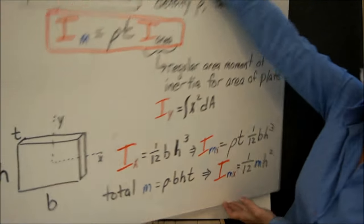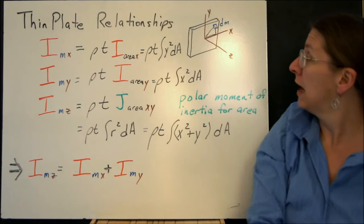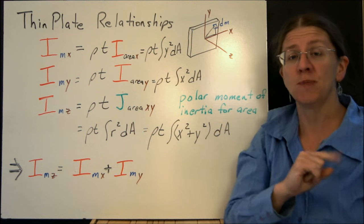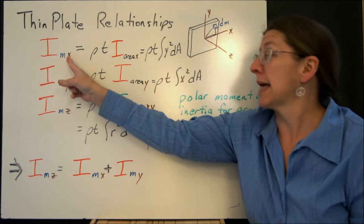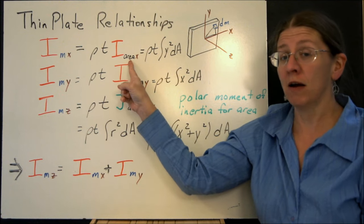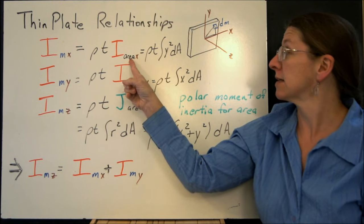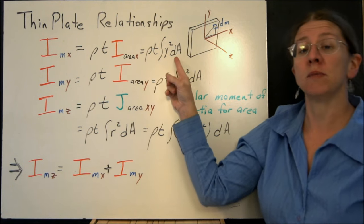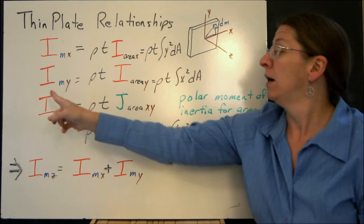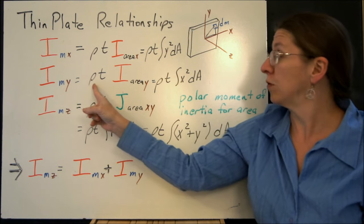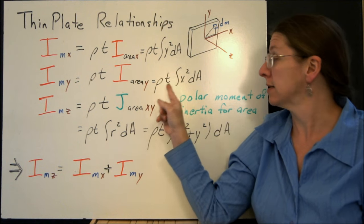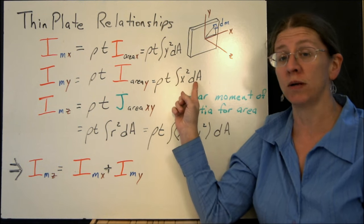So looking from that, there are some thin plate relationships that we can use. If the mass moment of inertia about the x-axis is ρt times the area moment of inertia about the x-axis, so I've got ρt times the integral of y² dA. And similarly, I_m about the y-axis would be ρt I_area about the y-axis, or ρt times the integral of x² dA.